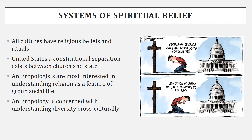Some groups in the U.S. — generally conservatives — would like religion to be involved with the state, while liberals or Democrats tend to support separation of church and state. In Islamic countries, religion and the state are typically tied together, so laws of the state are created based on religious law. Anthropologists are especially interested in how religion influences social lives.